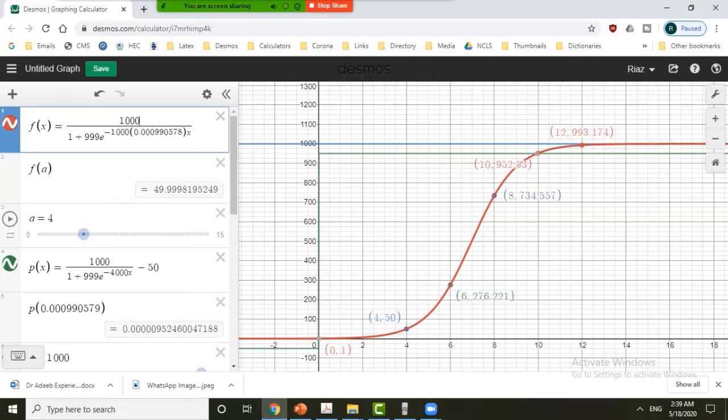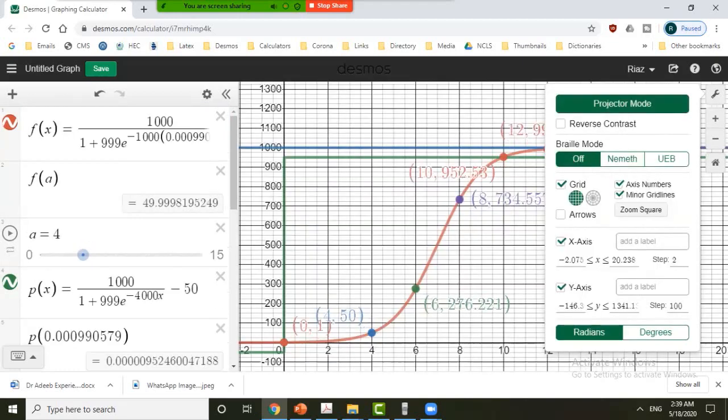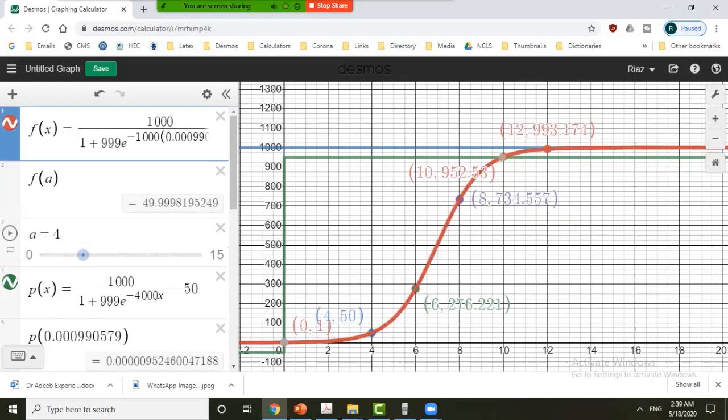When t is 4, 50 students, when t is 6, 276. After 8 days 735. After 10 days 953 almost. And after 12 days and so on. And this is the logistic curve. You can also see this in the projector mode. The red color graph is the graph of the logistic curve.